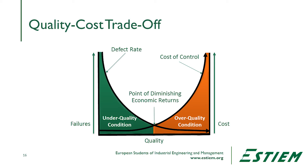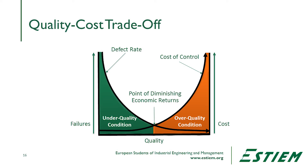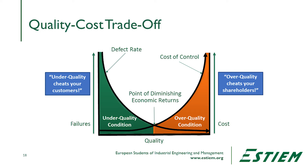At some point in time, according to this function, it would say quality costs too much. At the other side, we see that we actually haven't spent enough money and we have less quality than would be desirable. Under-quality cheats the customer; over-quality cheats your shareholders. So how are the functions calculated?